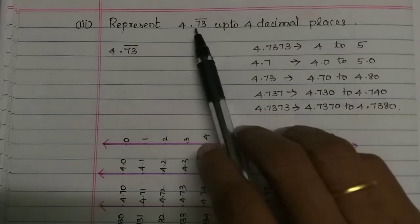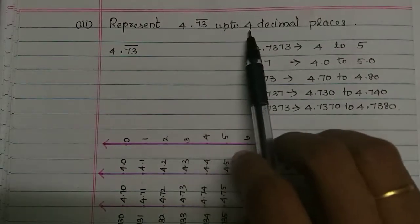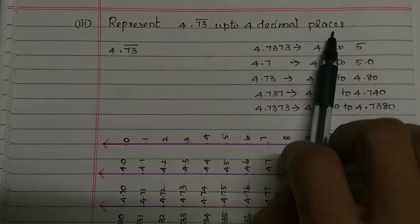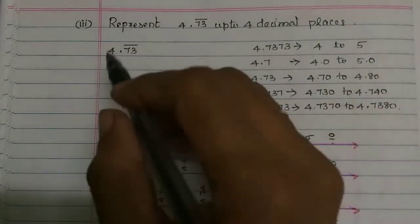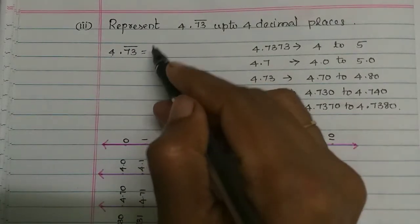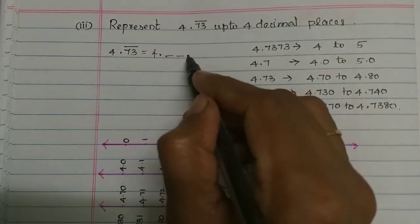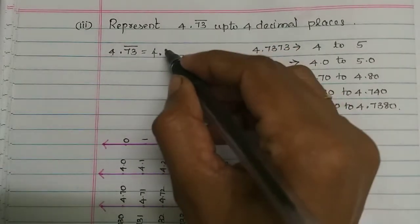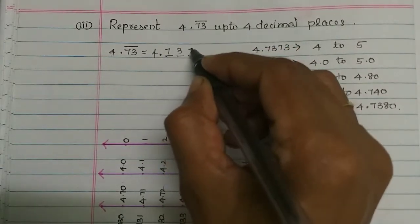Represent 4.73 bar up to 4 decimal places. If I say this, we have 4.73 bar. We have 4 decimal places and 4 numbers. Then we have 73 bar and 7373.